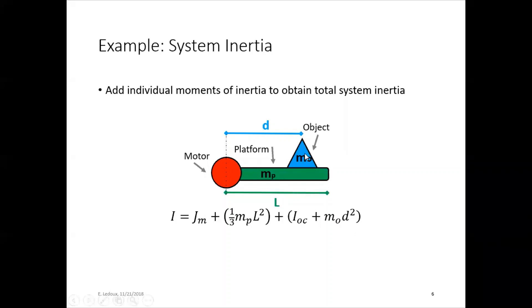If the object were small enough and concentrated enough that it didn't really have a moment of inertia around the center, then you'll just have the mD squared term, which is for a point mass.